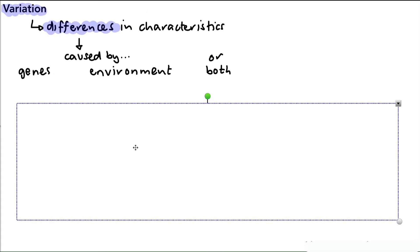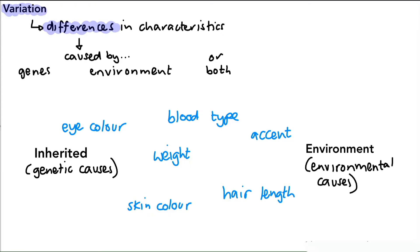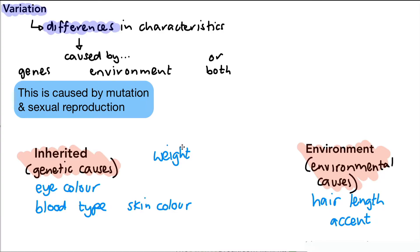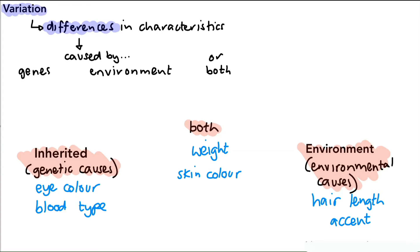So let's have a look at a couple of examples of what we mean. On the left hand side there, we've got genetic causes of differences, or genetic causes of variation. On the right hand side, we've got environmental causes of variation. So there are some examples there in blue. If we took for humans, these are all characteristics for humans, eye colour would be purely genetic. Blood type would be genetic. Hair length would be environmental only. Accent would be environmental. And then weight and skin colour, these are affected by both the environment and by genes as well. You can imagine skin colour can darken if there's a high exposure to sunlight. Weight can vary depending on the diet as well.